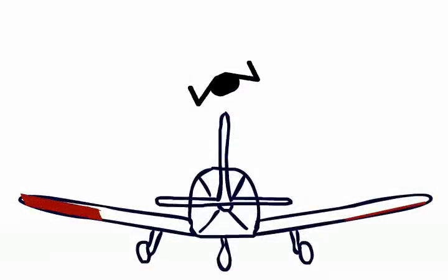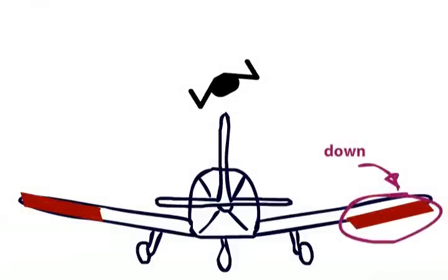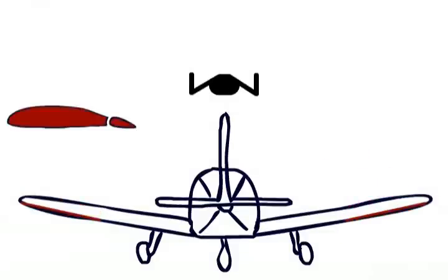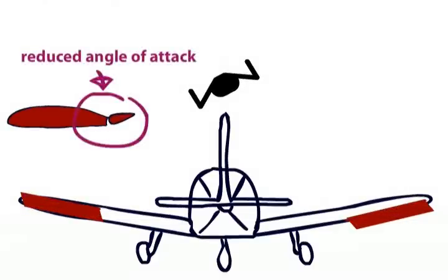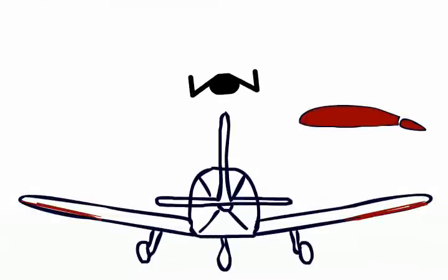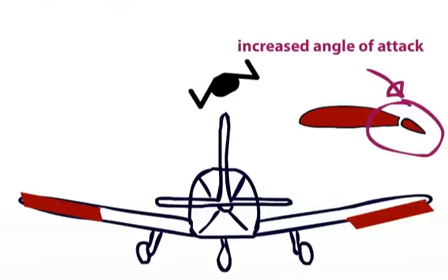And this will cause the left aileron to move upwards and the right aileron to move downwards. From the last video, you should remember that an aileron moving upwards decreases the angle of attack, and this will reduce the lift generated by the left wing. On the right wing, the aileron moves down, which increases the angle of attack, increasing the lift on the right wing. This imbalance of lift will cause the aircraft to roll to the left.